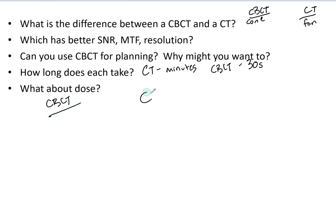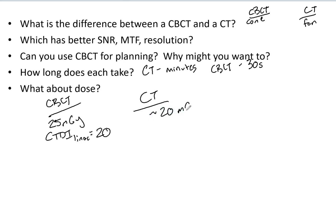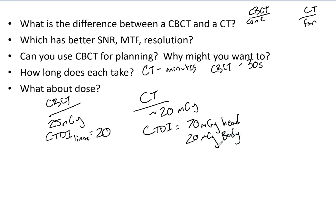For cone beam CT, the dose is around 25 mGy — for a TrueBeam linac it can be around 20 mGy. For a diagnostic CT, we're also looking at around 20 mGy, but the CTDI differs: approximately 70 mGy for the head and about 20 mGy for the body. A good question to explore on your own: why does the head have a higher CTDI than the body? It's an important concept they could definitely ask on your exam.